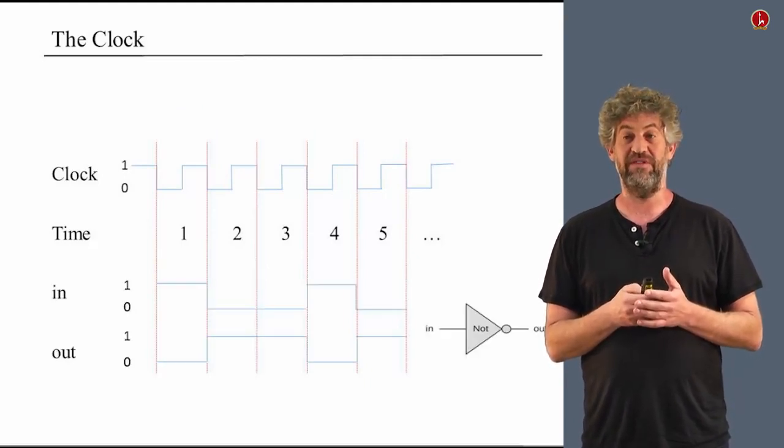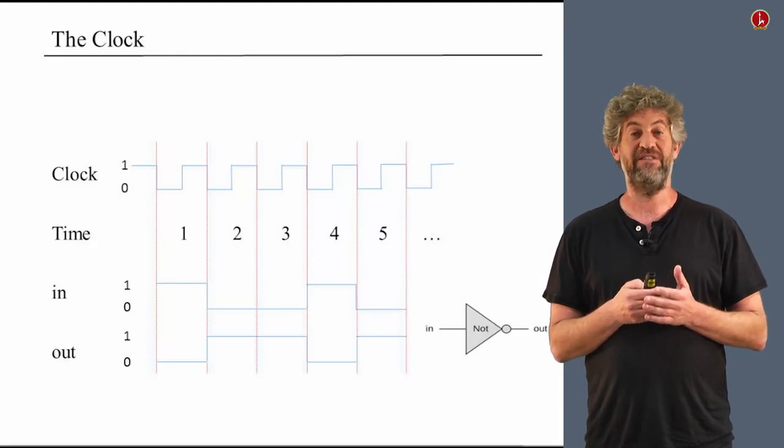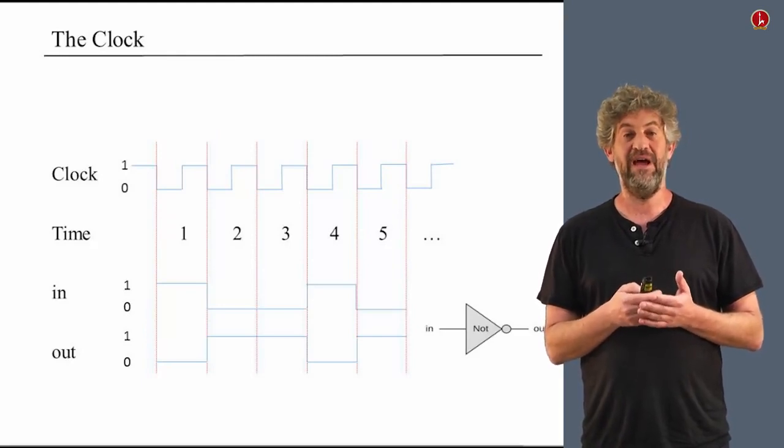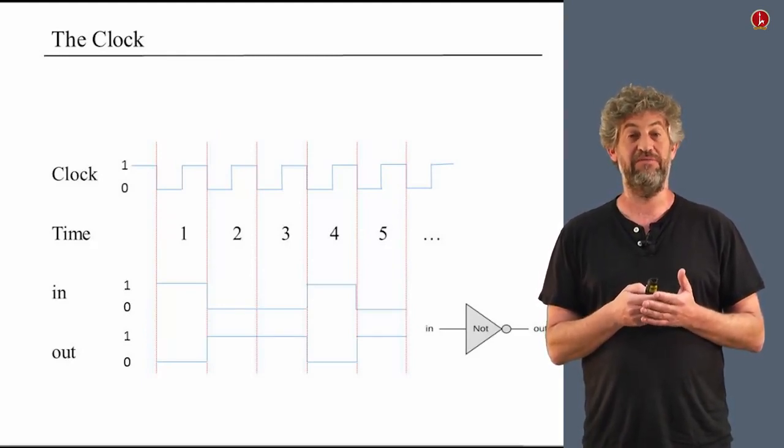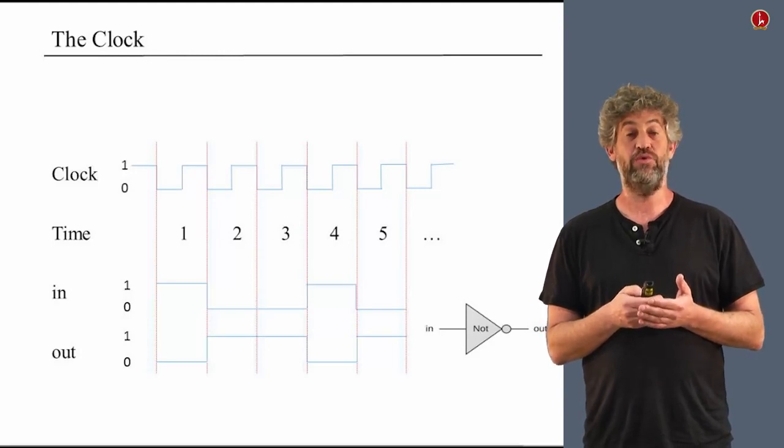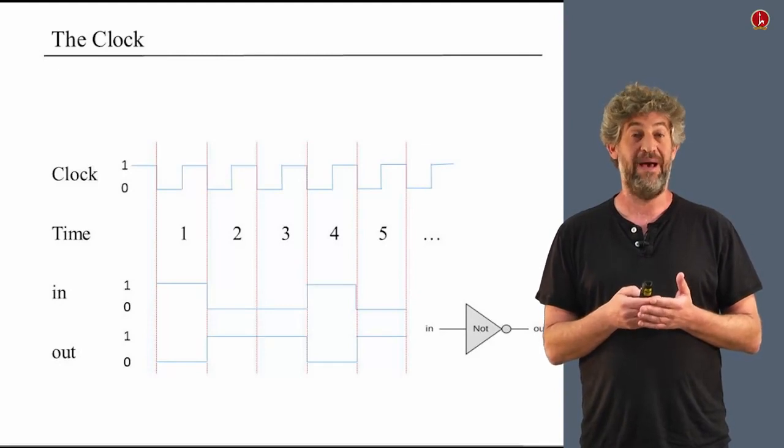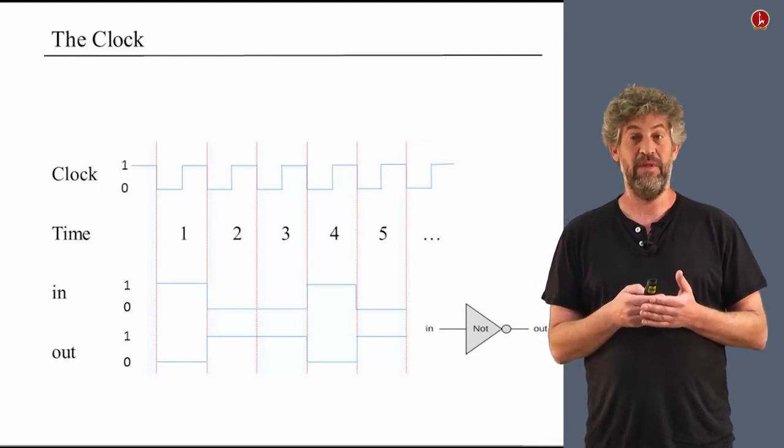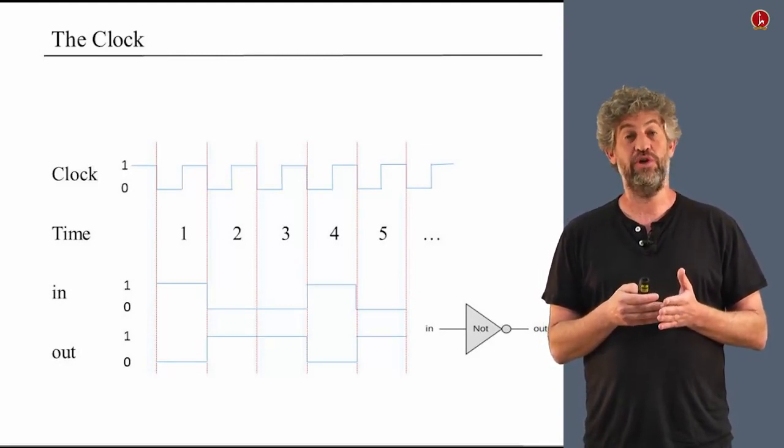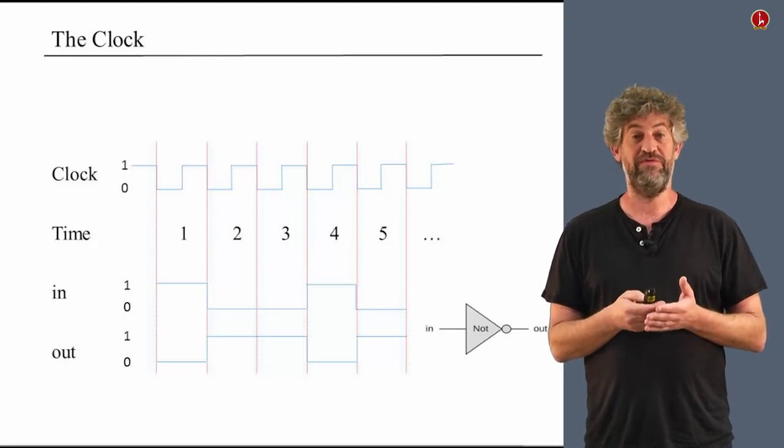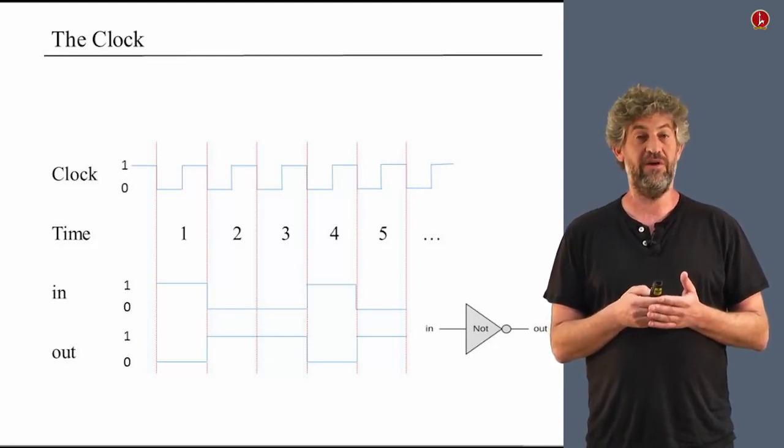For example, if we have a NOT gate, if we look at its input and its output, at every different time unit, it can have a different input. And at that time unit, it will compute the output from that input in an instantaneous manner, as we think about it. Every time unit, the input could change, and then the output would follow.